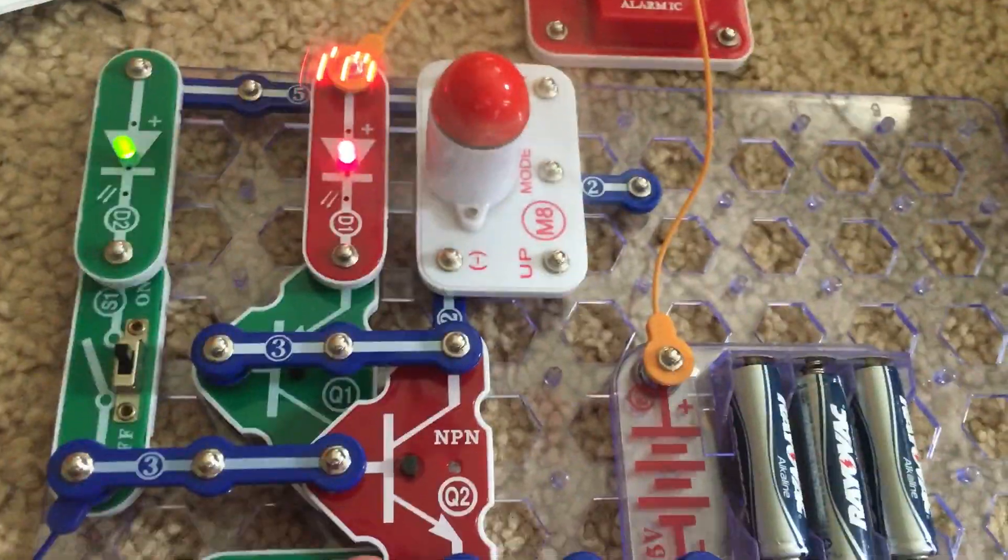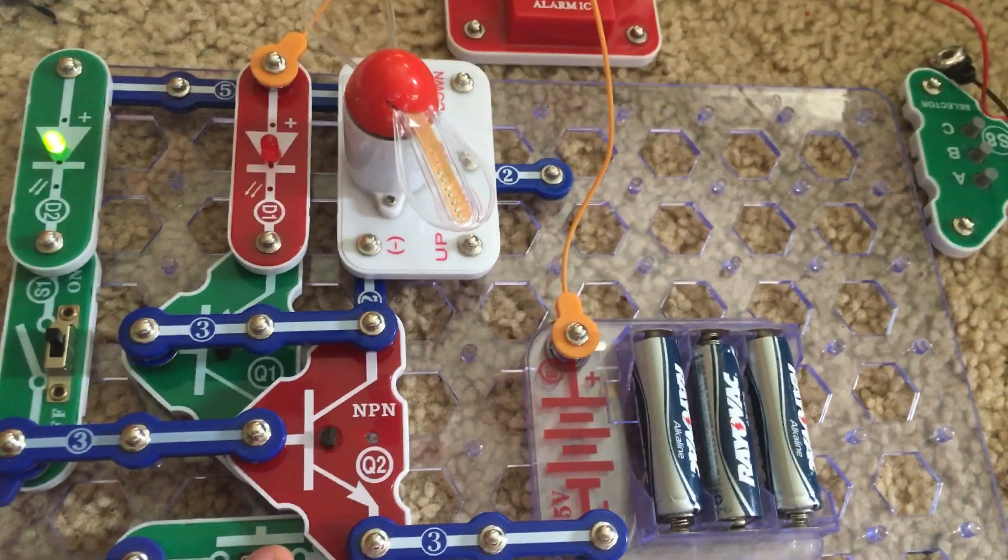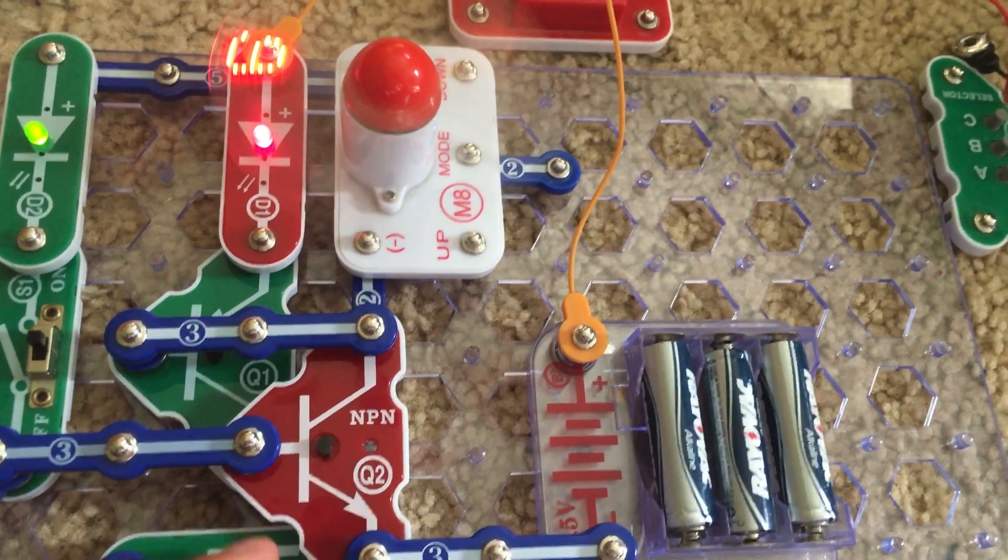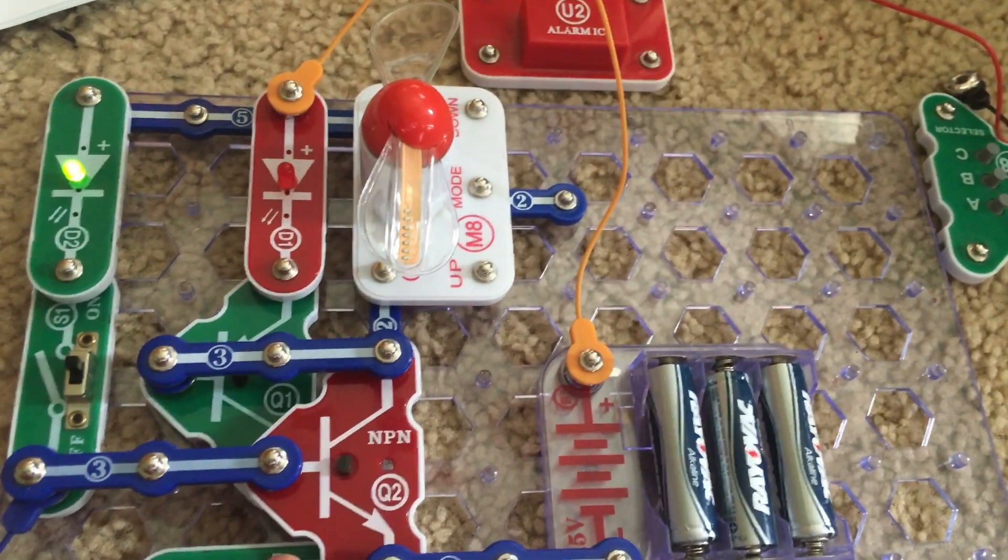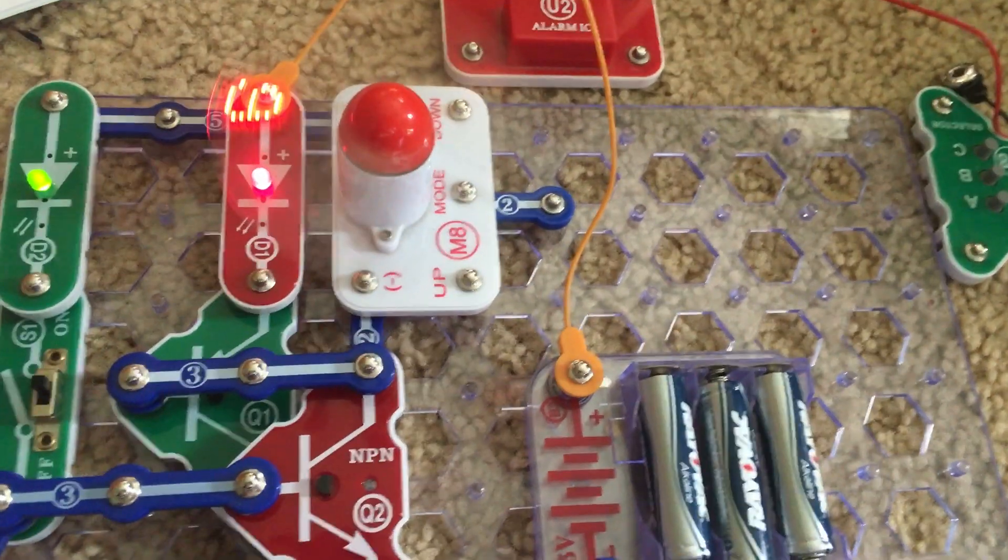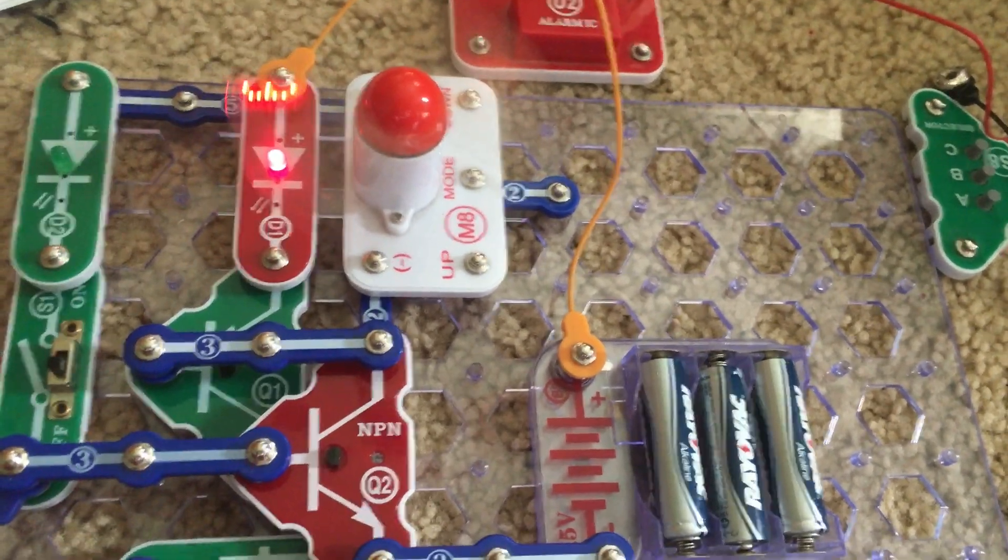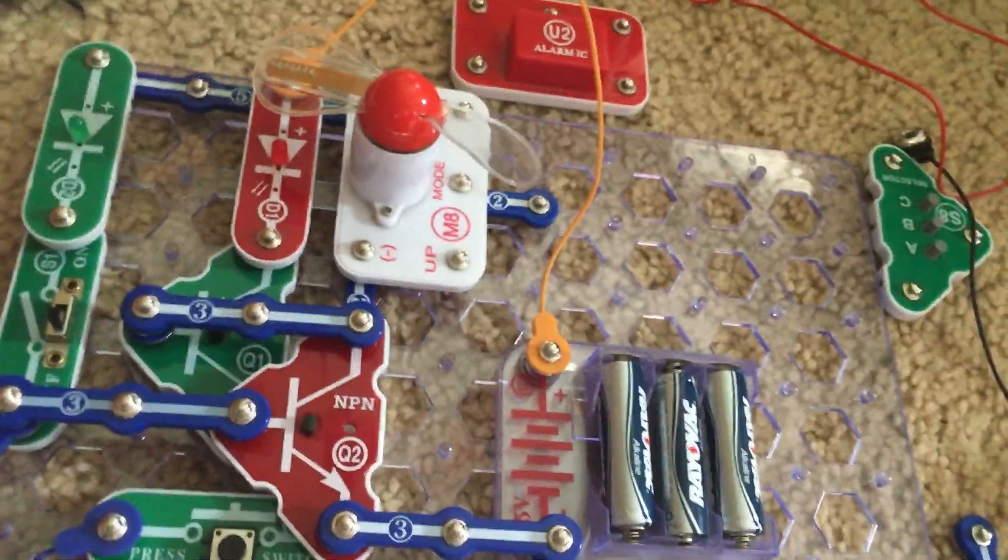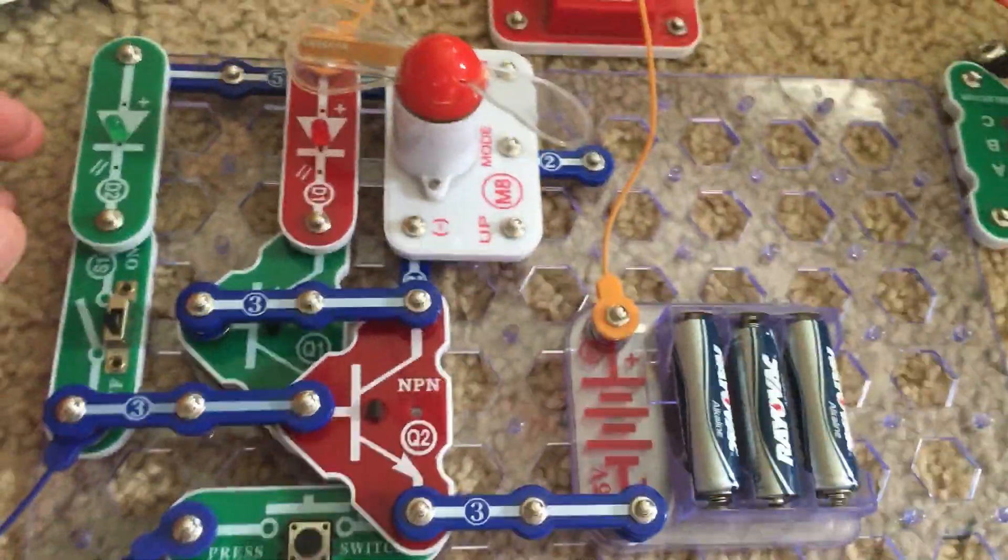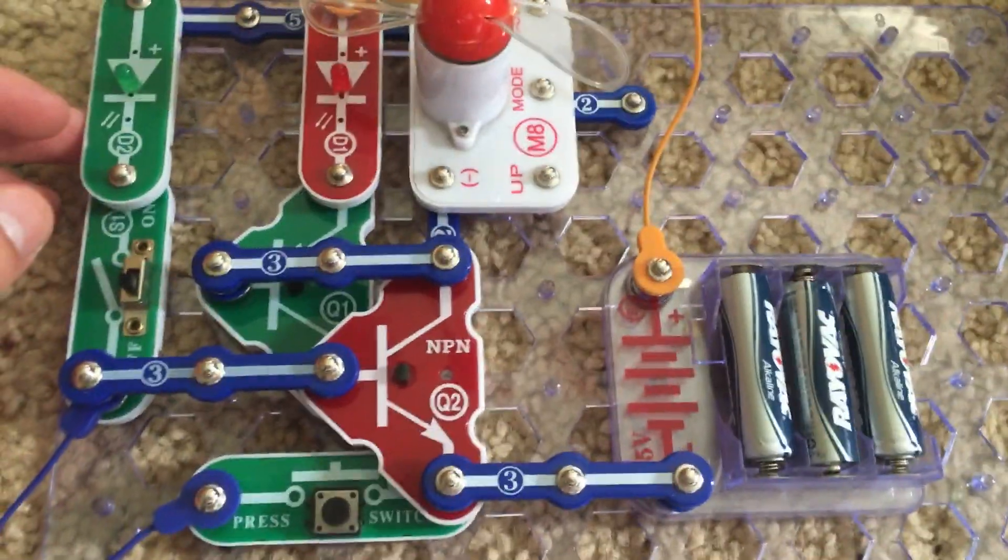Now you have to have the switch off in order for the circuit to stop, because even though when you hold down the press switch it will come back on when you release it. The slide switch is still on. You have to turn the slide switch off first and then push the S2 switch, the press switch, to stop the circuit completely.